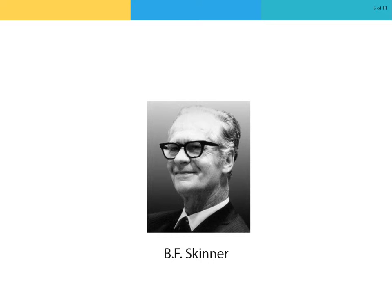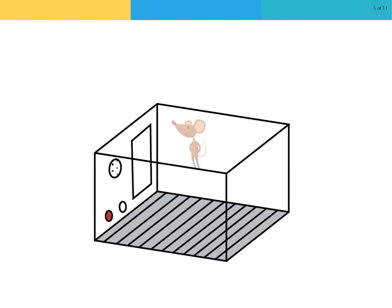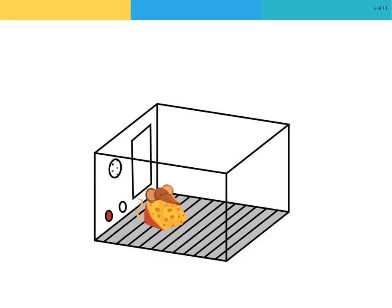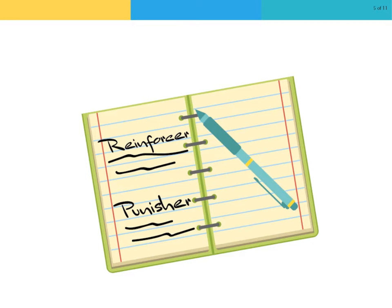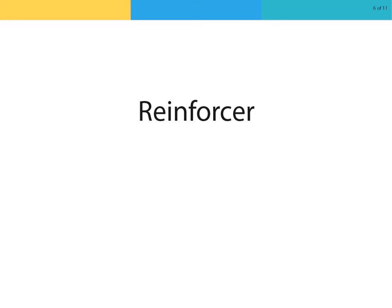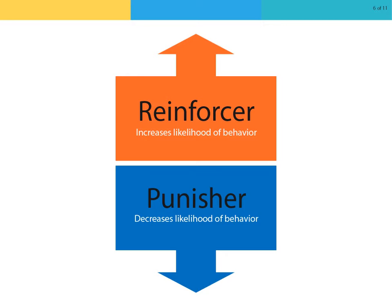Behavioral psychologist B.F. Skinner expanded on Thorndike's ideas through experimentation on rats. Much like Thorndike's cats in the puzzle box, Skinner created a puzzle box for rats with levers to release food or water. He studied how the rats' behavior changed through reinforcement and punishment and developed terms to describe the process of operant learning. Skinner used the term reinforcer to describe any event that increases the likelihood of a behavior, and the term punisher to describe any event that decreases the likelihood of a behavior.